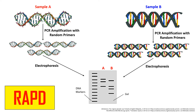The DNA sequence of both sample A and B was different, which is why the primers bind at different positions in both samples, giving us different RAPD patterns. By this, we can compare or identify a particular species by analyzing its RAPD pattern. This is how we perform the RAPD technique.